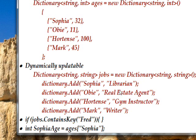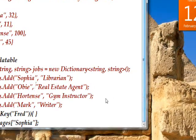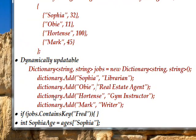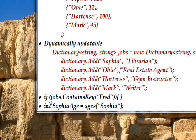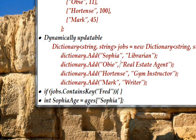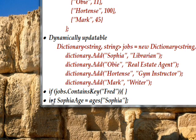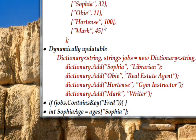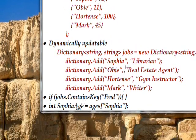There are a lot of different properties and methods associated with dictionary, so you can do a lot of things. For instance, you can write `if jobs.ContainsKey("Fred")`, which would return false here because Fred isn't a key. Generally speaking, the way you look things up is you treat the dictionary like an associative array — so you'd say `ages["Sophia"]`, and that returns the value, in this case returning 32.